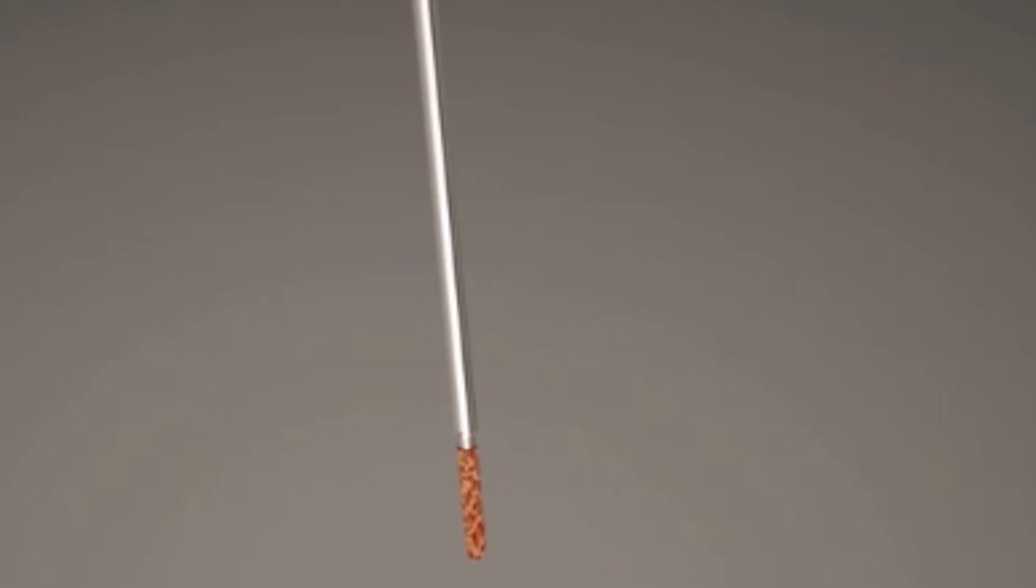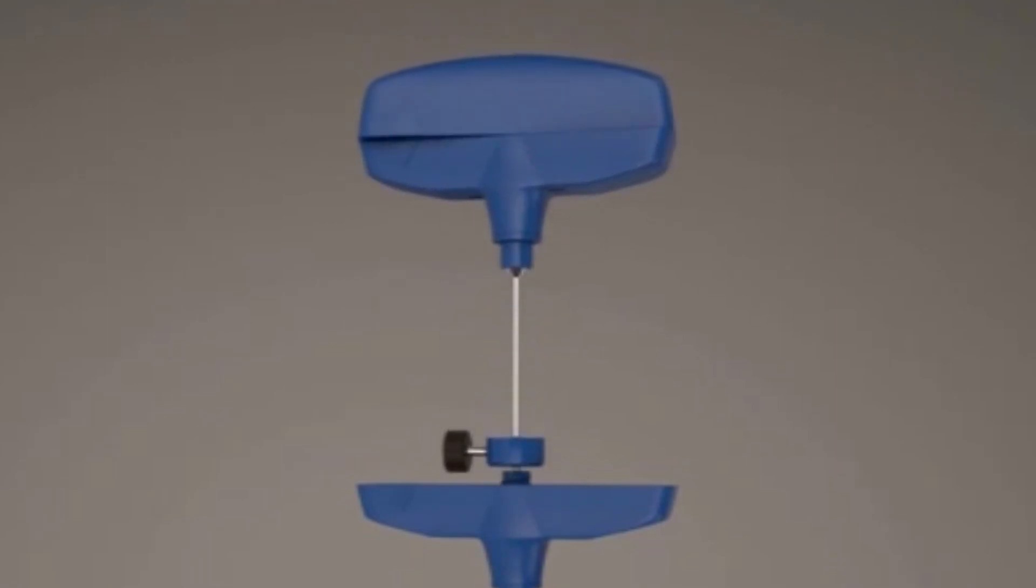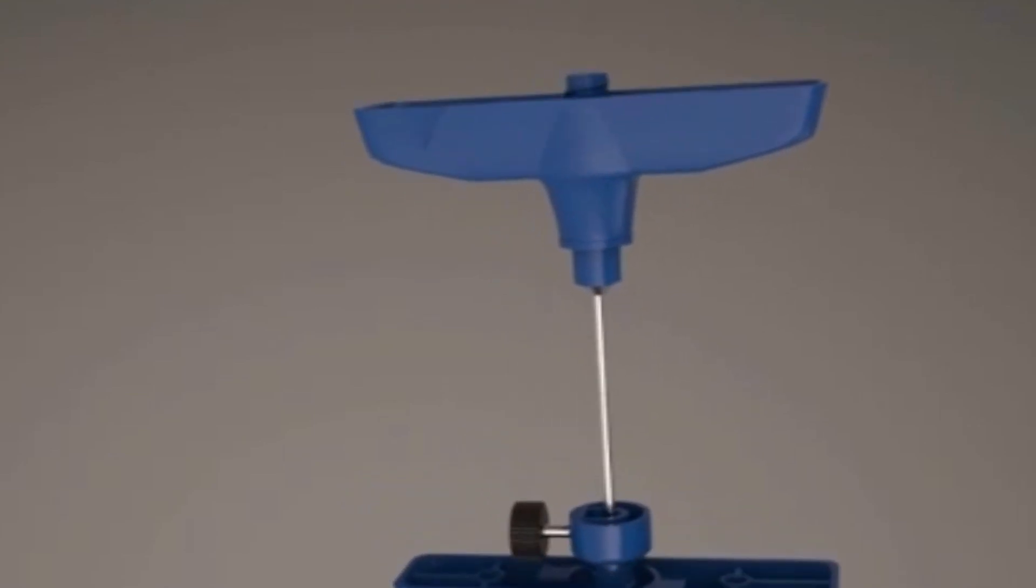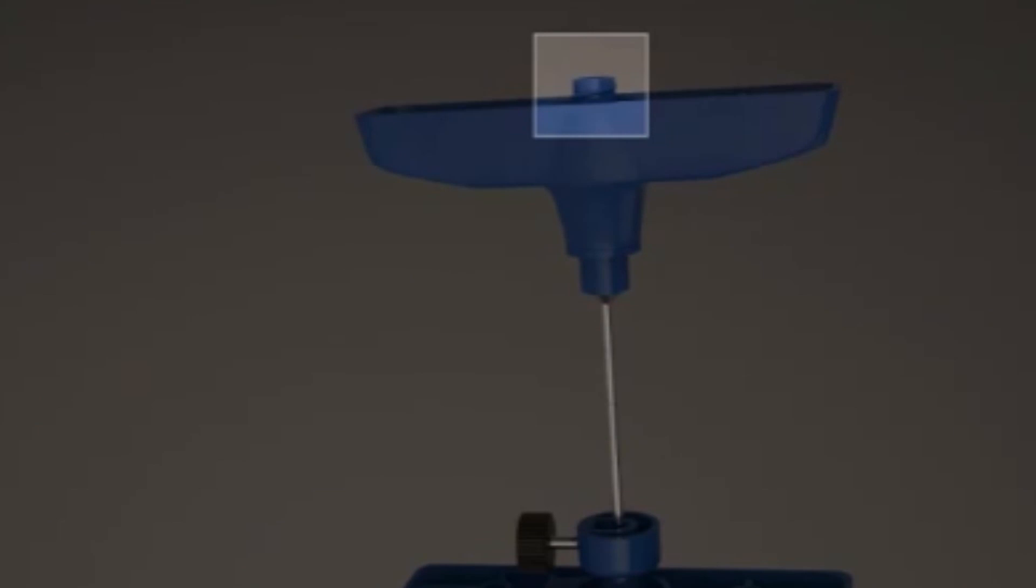The biopsy needle can be reinserted through the cannula to obtain additional samples. If aspiration is required to sample a lytic mass or gather blood, a syringe may be attached to the lure lock feature of either the biopsy needle or cannula.